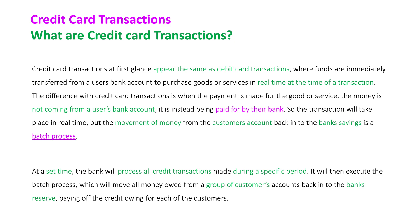When you go to purchase a product, you might use your own bank card, go to the FPOS terminal, select savings, and it will deduct the amount you're paying for those goods straight out of your bank account. The difference with credit card transactions is that when the payment is made, the money is not coming out of the user's bank account — it's instead being paid for by their bank. The transaction will still take place in real-time and appear normal, just like a debit card transaction.